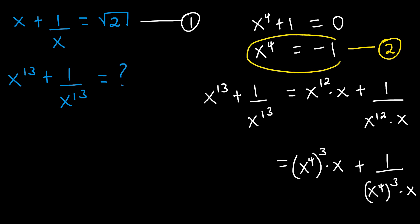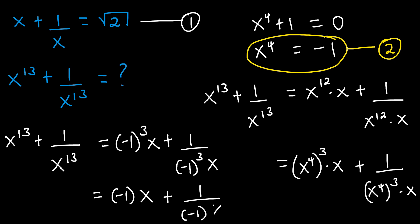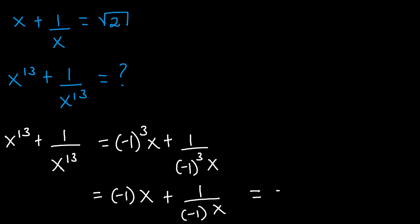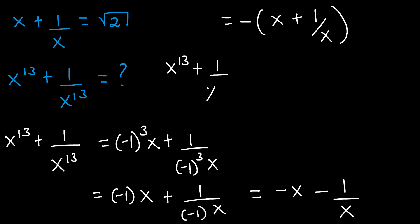From equation 2, we know that x to the power of 4 equals negative 1. Therefore, x to the power of 13 plus 1 divided by x to the power of 13 equals negative 1 to the power of 3 times x, plus 1 divided by negative 1 to the power of 3 times x. Since negative 1 to the power of 3 is negative 1, this becomes negative x plus 1 divided by negative x, which simplifies to negative x minus 1 divided by x. Taking out negative 1, we get negative of x plus 1 divided by x. Since x plus 1 over x equals square root of 2, x to the power of 13 plus 1 divided by x to the power of 13 equals negative square root of 2.